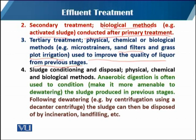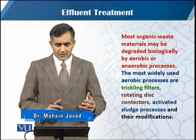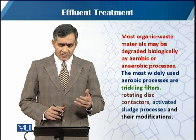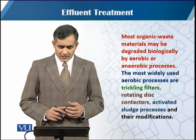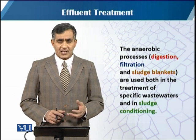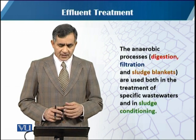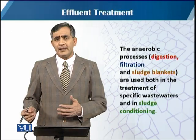The fourth stage is sludge conditioning and disposal, using physical, chemical, and biological methods in which aerobic digestion is often used for conditioning, followed by dewatering using centrifugation with decanter centrifuges. The sludge can then be disposed of by incineration or landfilling. Most organic waste material may be degraded biologically by aerobic or anaerobic processes using different organisms. The most widely used aerobic processes are trickling filters, rotating disc contactors, and the activated sludge process. Anaerobic processes include digestion filters and sludge blankets, used both in the treatment of specific wastewater and in sludge conditioning, sometimes combining both aerobic and anaerobic strategies.